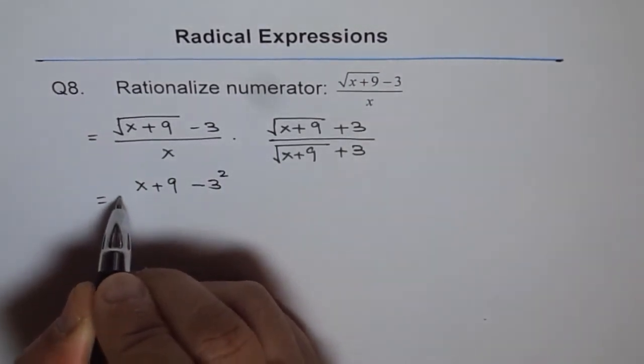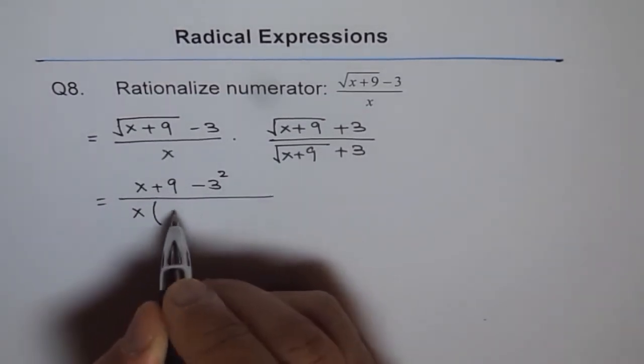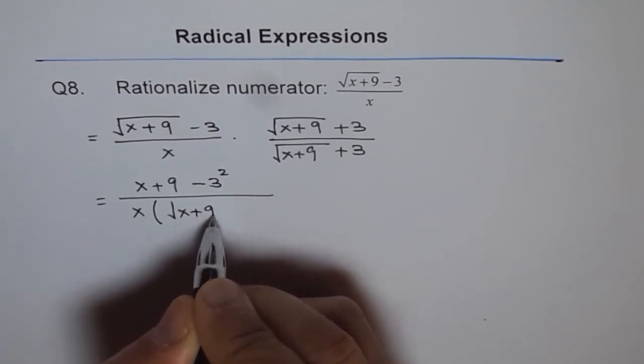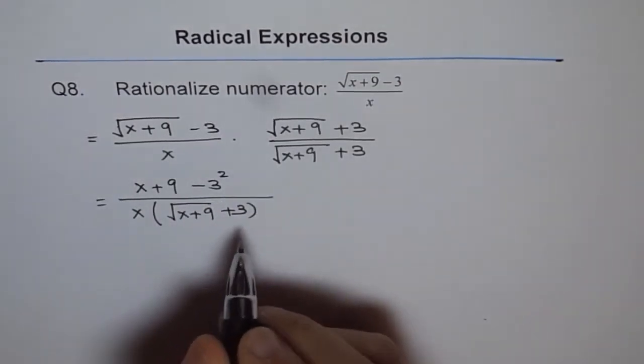Divided by x times, we can write all this in brackets. Square root of x plus 9 plus 3. There is no need to expand the denominator.